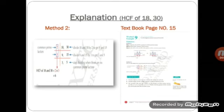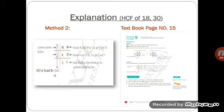Now 3 is a common prime factor of 9 and 15, so the division is continued. 9 divided by 3 is equal to 3, and 15 divided by 3 is equal to 5. Now there is no more common prime factor of 3 and 5, so the division is stopped. The common prime factors taken out are 2 and 3. 2 multiplied by 3 is equal to 6, which is the HCF of 18 and 30. This answer is the same as in method one, so we can conclude that both methods of finding HCF are correct.